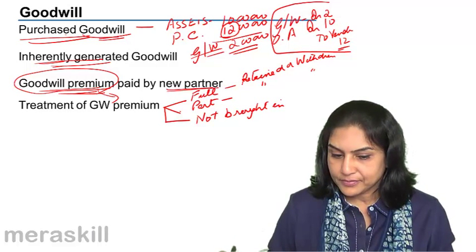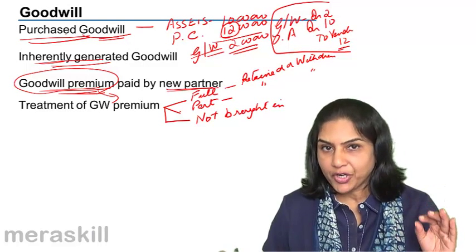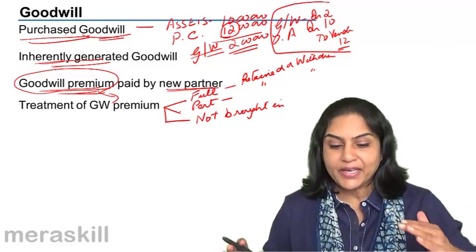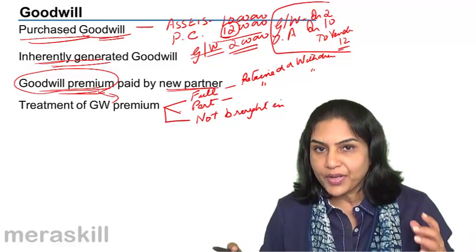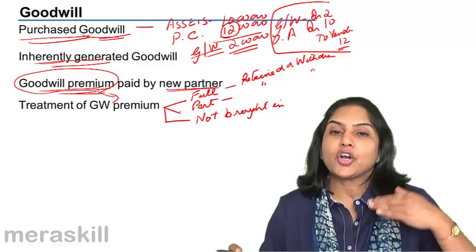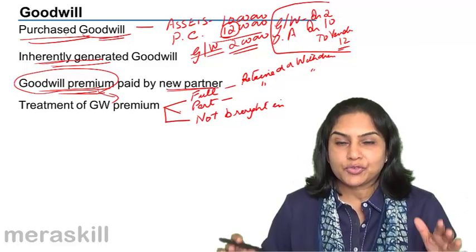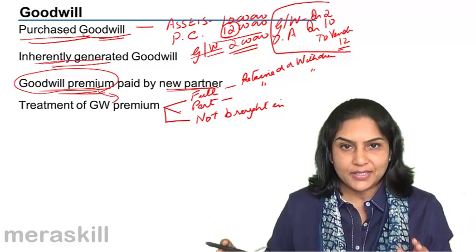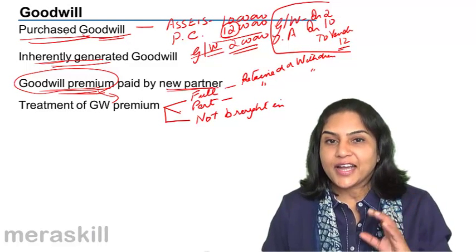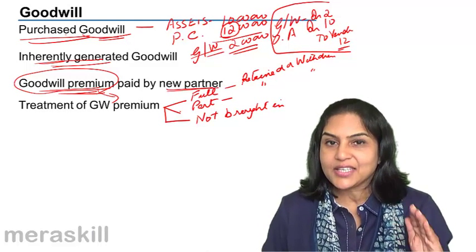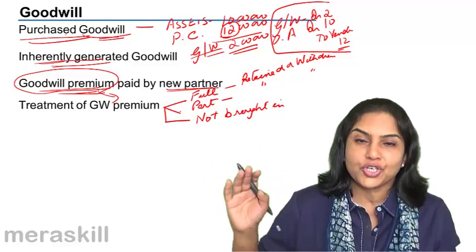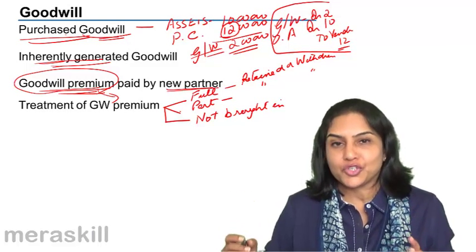To summarize: goodwill can be brought into the books only if it is purchased — only if the firm pays cash for the amount of goodwill. Otherwise, even if goodwill exists inherently in the business, such inherently generated goodwill cannot be shown in the balance sheet as a matter of sound accounting practice. However, since such an asset does exist in the business, it is only fair that the sacrificing partners are given some compensation by the new partner, who will also in future participate in and get the benefit of this goodwill of the firm.